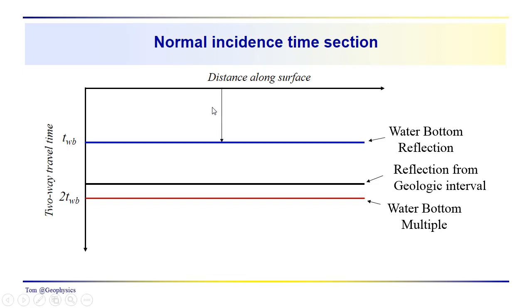And this would be a water bottom multiple. Now, the giveaway is that this time that we have up here from the datum down to the water bottom, we duplicate that and our water bottom reflection comes in at twice that time. So, that's kind of a red flag for us.